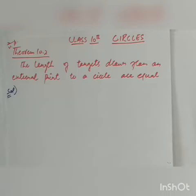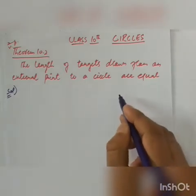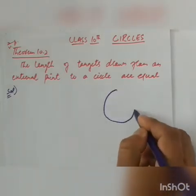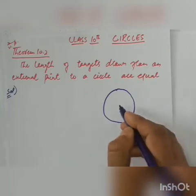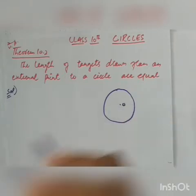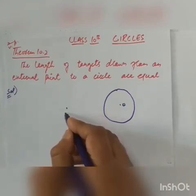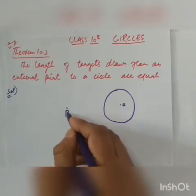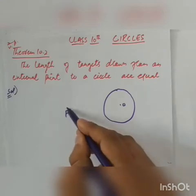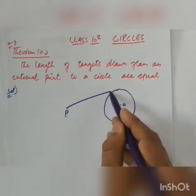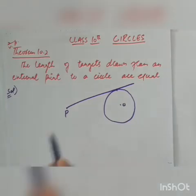We have a circle drawn with center O. And then we will draw an external point. I will draw the external point and name it P. We will draw two tangents from point P to the circle.